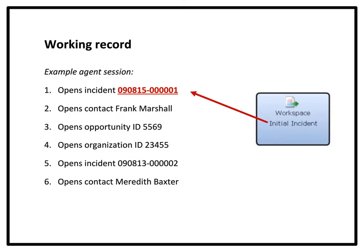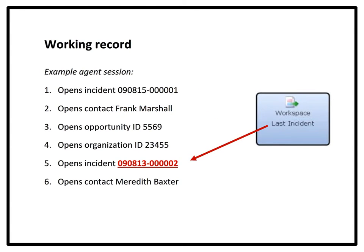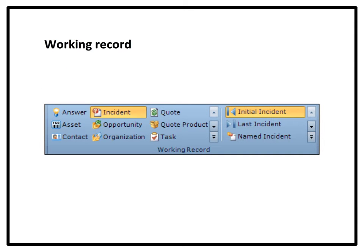Such as the initial incident, initial contact, last incident, and last contact. In this case, the working record button group will expand with additional buttons so you can select the initial record, last record, or a record named elsewhere in the flow.